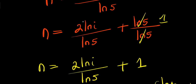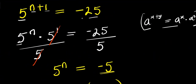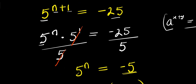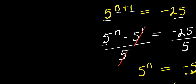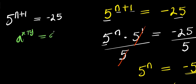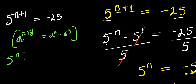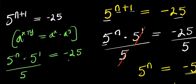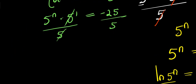This is the first solution. Now let's use another approach to solve this exponential problem. We again have 5 power (n+1) equals negative 25. Using the same property a^(x+y) = a^x times a^y, we have 5 power n times 5 power 1 equals negative 25. Dividing both sides by 5, we get 5 power n equals negative 5.